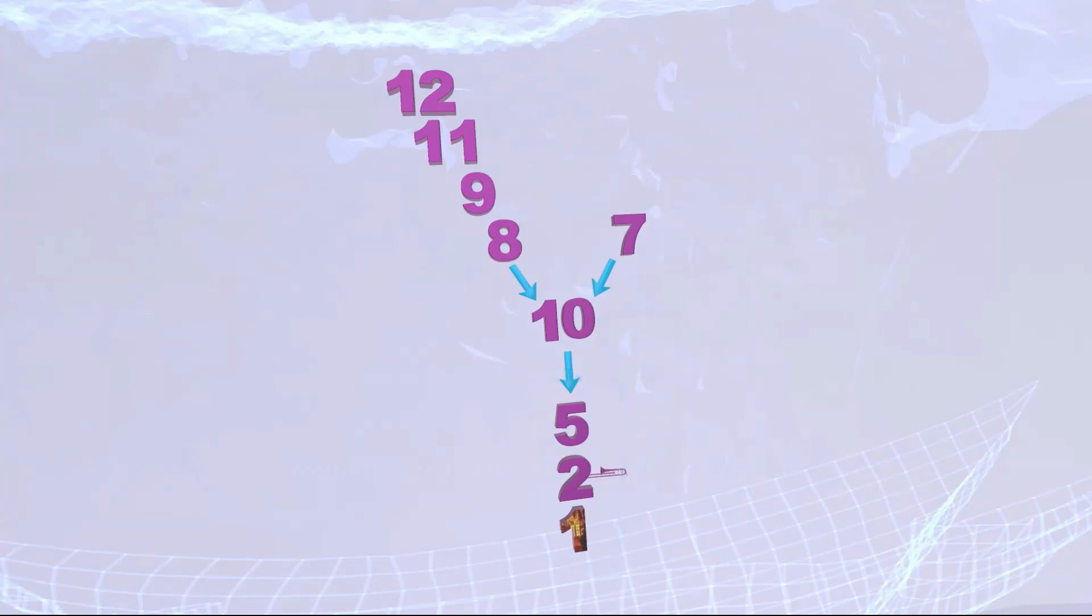The intrinsic pathway begins with 12 which is cleaved, then 11 is cleaved. We skip 10 because we want to get to 10, then we get to 9 and then 8, and then we get to 10. On the extrinsic pathway side, we begin with 7 which is cleaved and then we get to 10. Where do we see more numbers? On the intrinsic pathway.